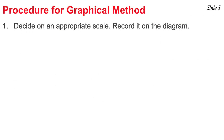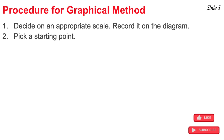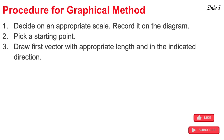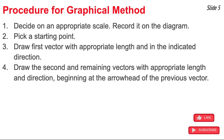Here we summarize the procedure for the graphical method of vector addition. First, decide on an appropriate scale — one that makes the vectors fill approximately all of the space provided for the problem — and record the scale on the diagram. Second, pick a starting point such that you don't extend your vectors off any sides of the allotted space. Third, draw the first vector with the appropriate length and in the indicated direction. Fourth, draw the second and remaining vectors with the appropriate length and direction, always beginning each vector at the arrowhead of the previous vector.